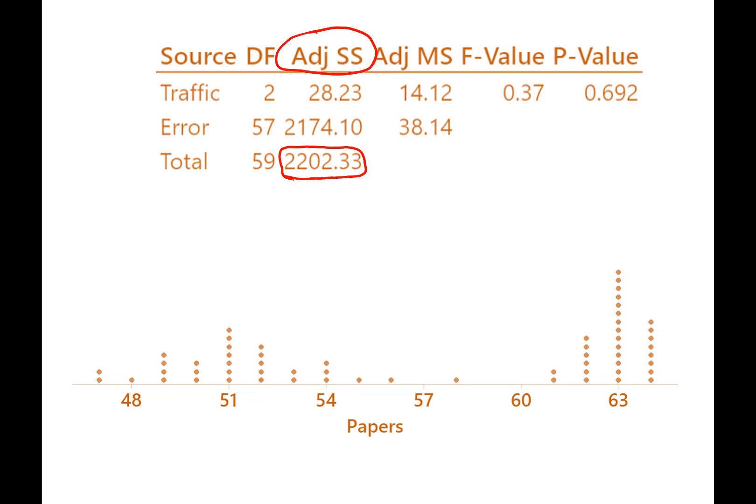Now how much of that spread out of the data is due to traffic? Well, it turns out not very much. Only just over about 28 of the 2200 is attributable to traffic. Anything we can't attribute in terms of how spread out the data is to our independent variable or our factor gets thrown into the error line, sum of squares. And so the majority of the 2200, the vast majority of the 2200 sum of squares is not explained by traffic.